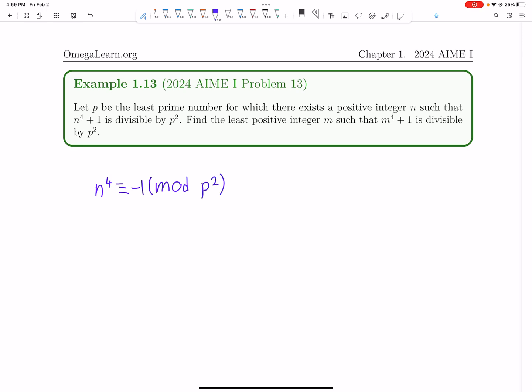So something you probably know is that n to the p times p minus 1 by Euler's theorem is 1 mod p squared.